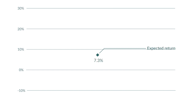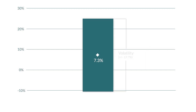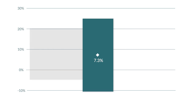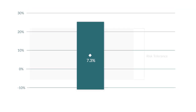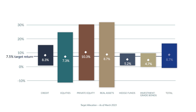The equities class is expected to produce one of the highest returns, but also comes with higher risk. In a given year, the return could range from positive to negative. This illustrates the volatility, or risk, of the asset class. While the return for this asset class is higher, its expected risk is beyond our risk tolerance for the total portfolio. So we combine this asset class with others to create a diversified portfolio that meets our long-term return goal with an acceptable level of risk.